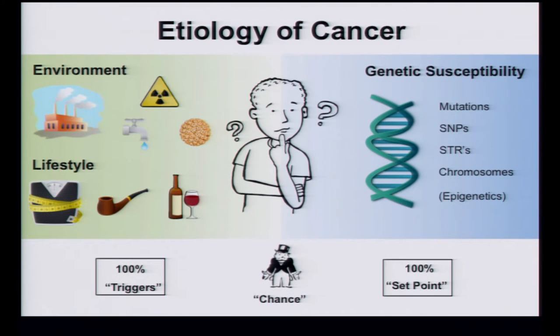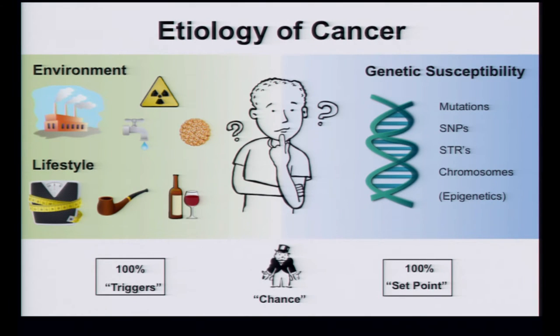We also know that there are stochastic events. We know that there are errors in the program of DNA repair, which are very important, and then all the chance issues. Some of us are a little bit skeptical of the statement of how important chance is. I think that's more an attribution of what we don't understand as opposed to necessarily saying that it's truly chance from a probabilistic point of view, but we can debate that later.